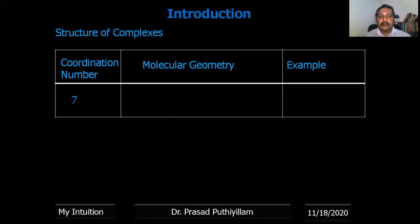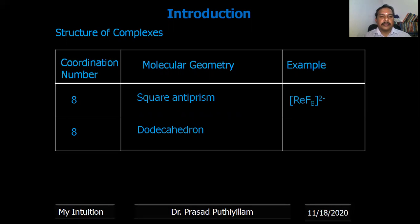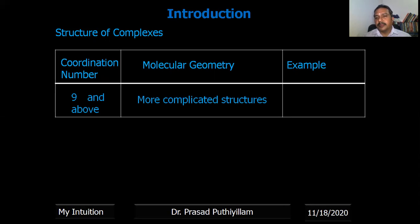If coordination number is seven, the geometry is pentagonal bipyramidal — example [ZrF₇]³⁻. If coordination number is eight, two geometries are possible: square antiprism — example [ReF₈]²⁻ — and dodecahedron — example [Mo(CN)₈]⁴⁻. For coordination number nine and above, the structures become very complex with no particular name assigned. A recently obtained example is [ReH₉]²⁻. This completes the introduction to coordination complexes.